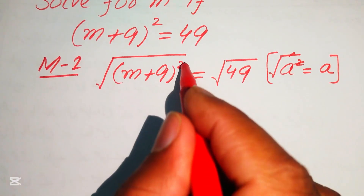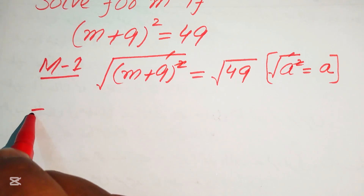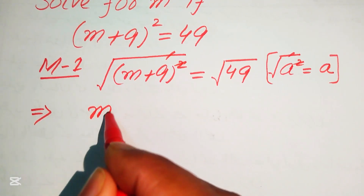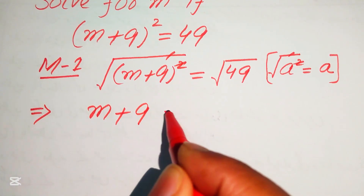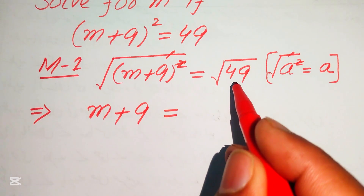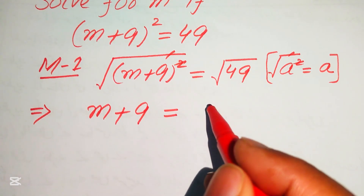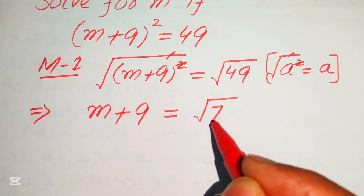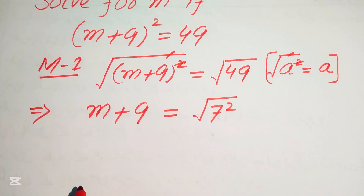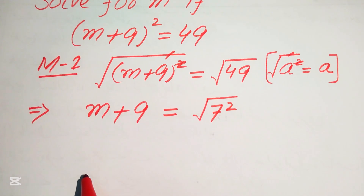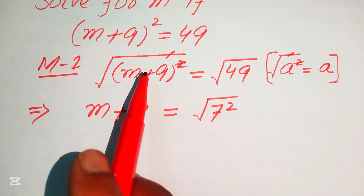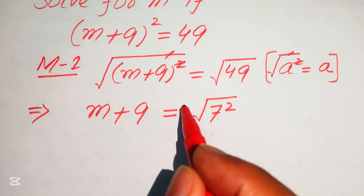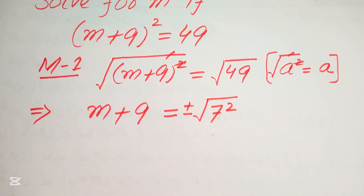According to this rule, the square and square root cancel each other and we obtain m + 9 equals — we write 49 as 7². Also remember, when we take the square root on both sides, we apply a plus-minus sign on one of the sides.